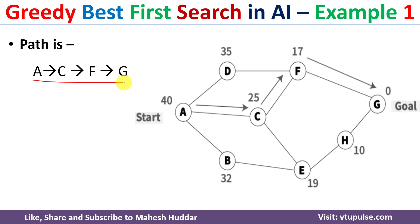This is how the greedy best first search algorithm works in artificial intelligence. We select the node based on the estimated cost from that node to the goal node, which indicates the node is more closer to the goal. I hope the concept of greedy best first search algorithm is clear. If you like the video, do like and share with your friends. Press the subscribe button for more videos and the bell icon for regular updates. Thank you for watching.